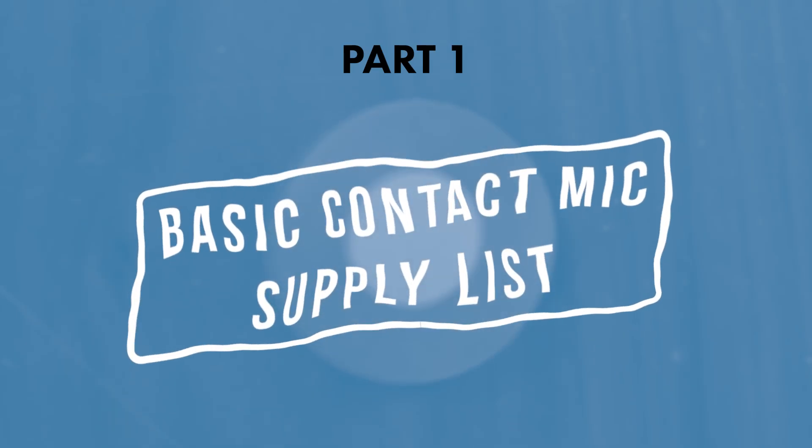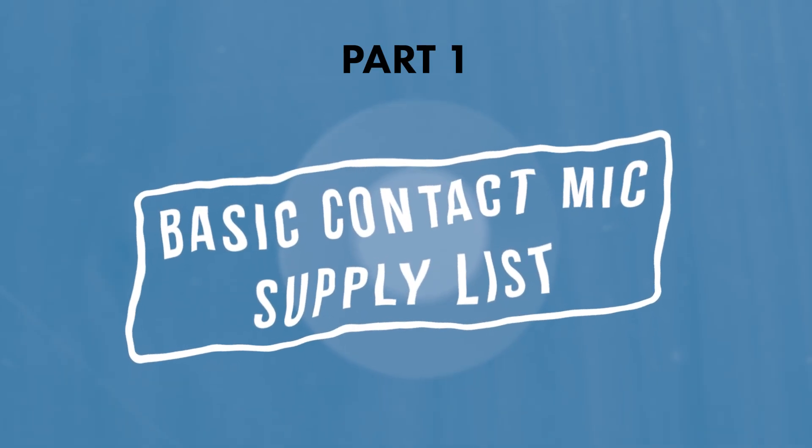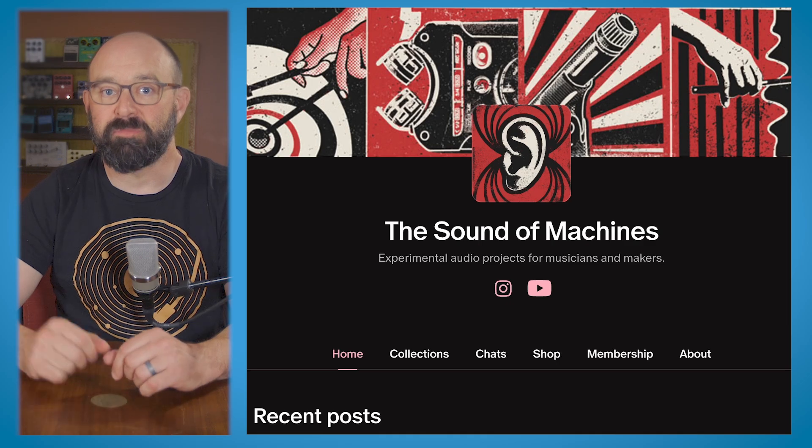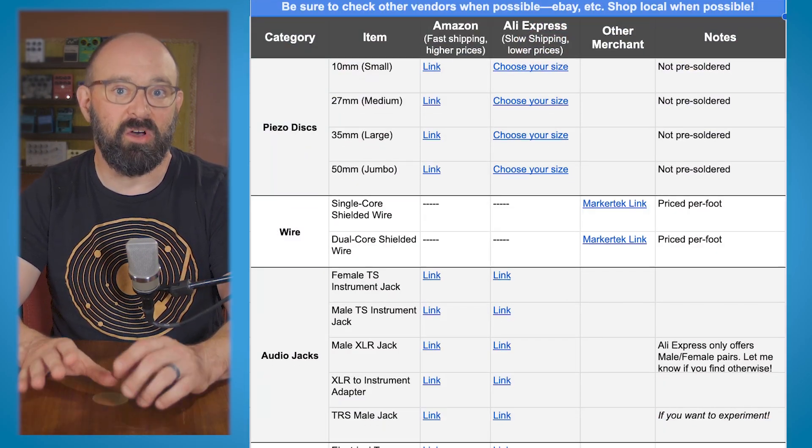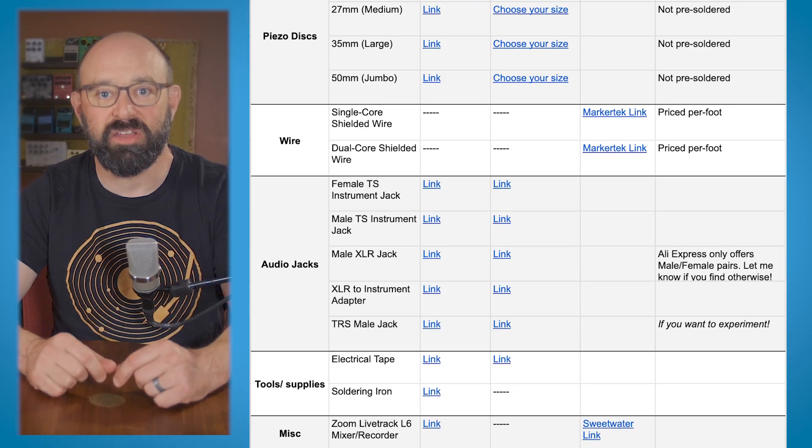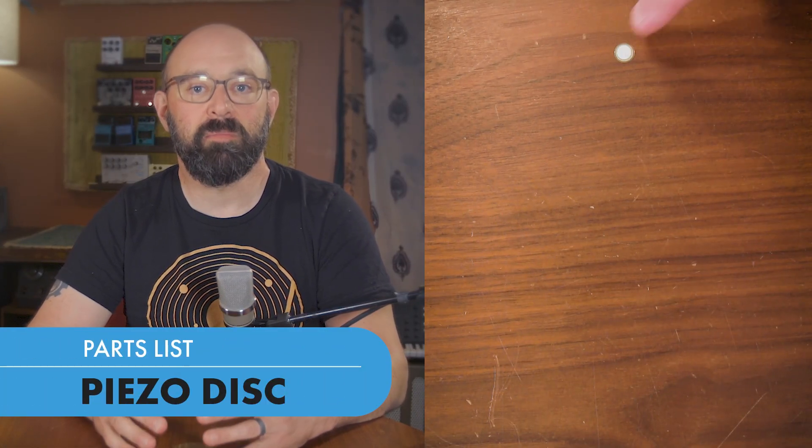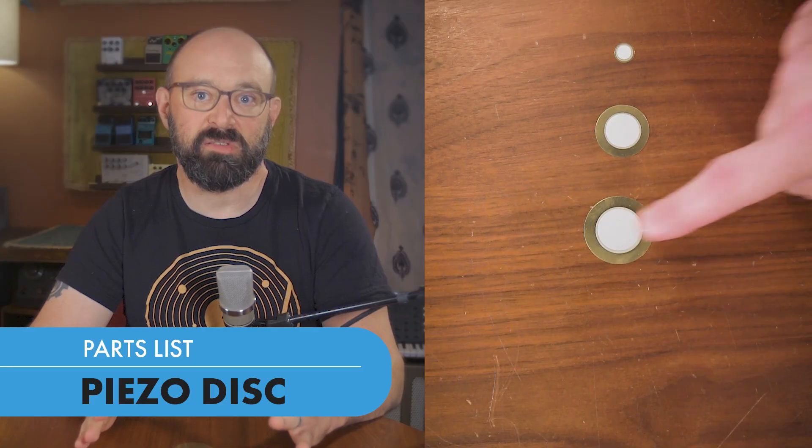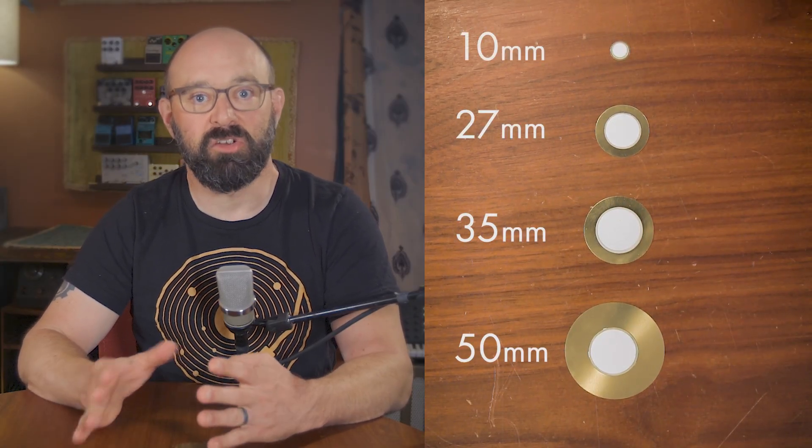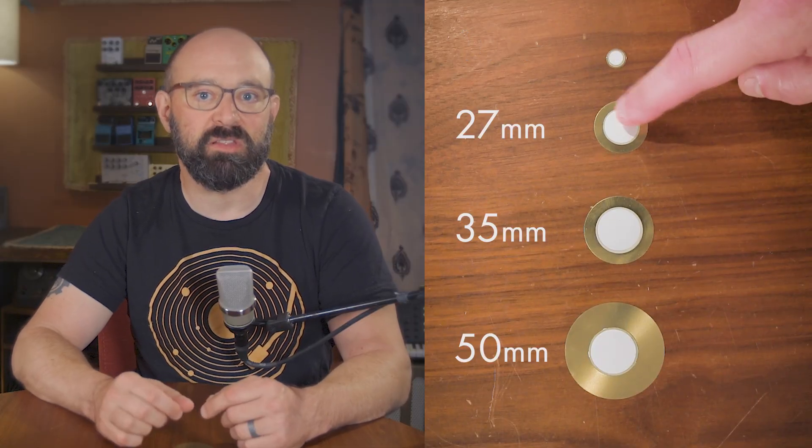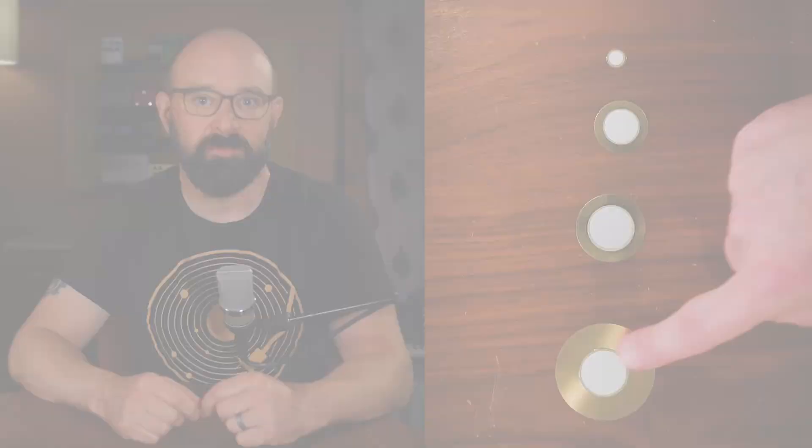All the parts that you need to build a contact microphone can be easily found online. If you're watching this on Patreon, I have a document in the description below with links to all the supplies that you're going to see in this video. So the first thing that you're going to buy is a piezodisc. And now these come in a variety of different sizes. The larger ones tend to pick up a wider frequency range. And the smaller ones are great at getting into tighter spaces that the large ones just won't fit in.